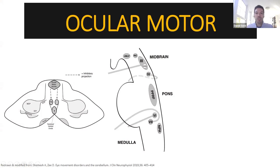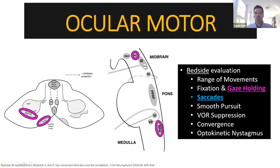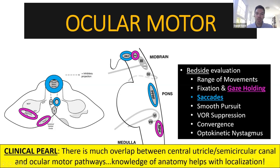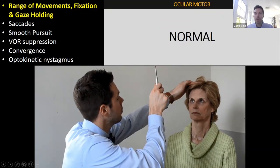First we'll talk about the ocular motor system. There are a lot of structures in the posterior fossa, cerebellum, and brain stem. We're going to touch on the range of movements: fixation, gaze holding, saccades, pursuit, VOR suppression, convergence, and optokinetic nystagmus. There is a lot of overlap between the central utricle and semicircular canal pathways and the ocular motor pathways, so knowledge of the anatomy and what you're testing for on your exam helps a lot with localization and etiology.